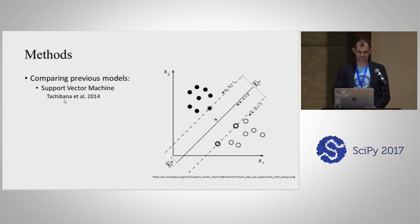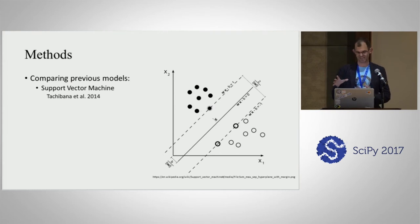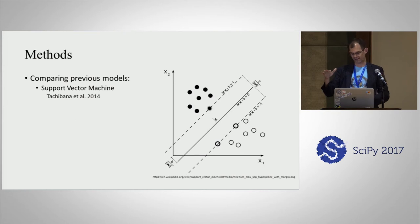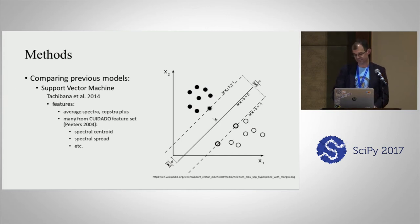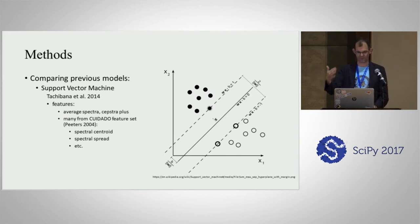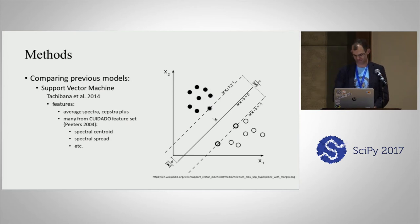Another group proposed using support vector machines. The algorithm finds a decision boundary that maximizes the margin between the groups you're trying to separate. The features they used were previously applied to large datasets for tasks like identifying genres of music.